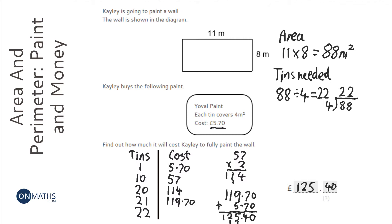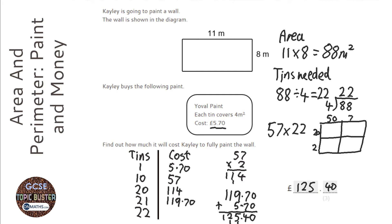Now, a different way you could do this is convert that £5.70 to 57. And then, you could have done 57 times 22. And a lot of you will be using this method. So, you'd do 50 and 7, 20 and 2.